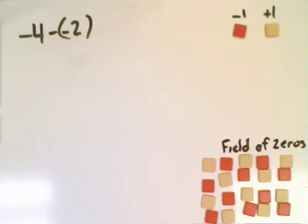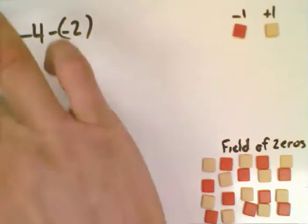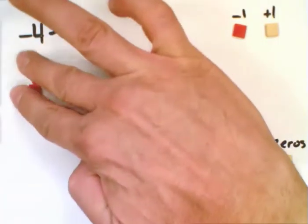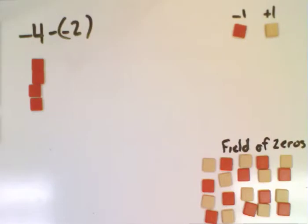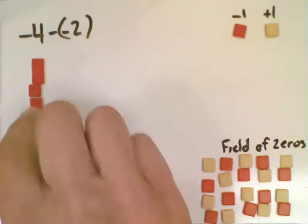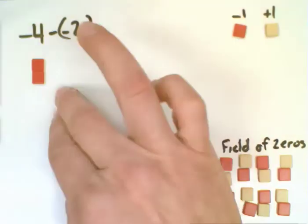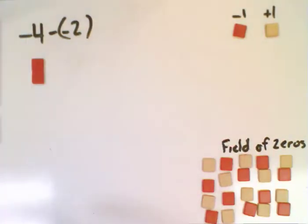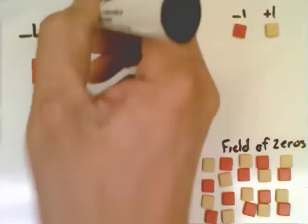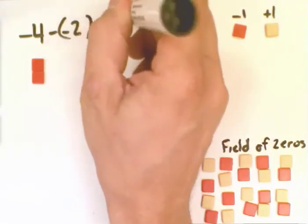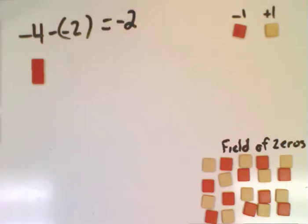And just to finish off, let's turn that problem around just a little bit. And so if we have negative 4 and we want to subtract negative 2 from that, we actually don't have to use the field of zeros in this case because we actually do have two negatives that we can remove. And so we physically subtract those. They're gone. And we're left with negative 2 tiles. And that's adding and subtracting using algebra tiles.